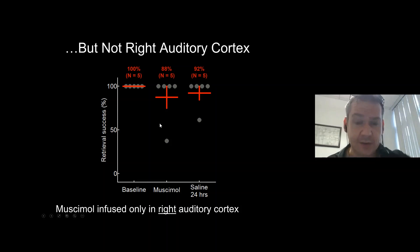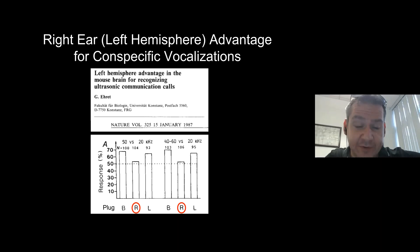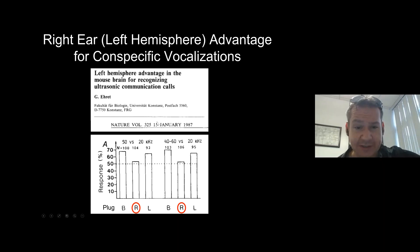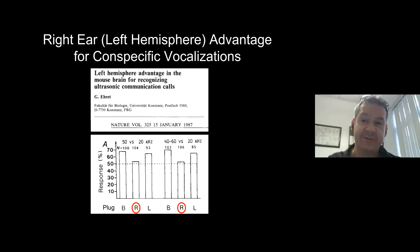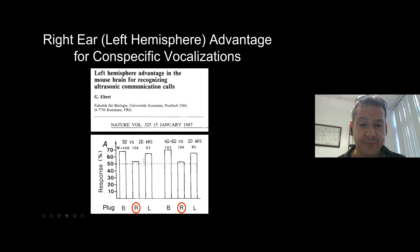This is consistent with earlier work from Gunther Ehret's lab. Gunther has been recording and synthesizing pup vocalizations dating back to the seventies and eighties. He published a single bar graph in Nature in 1987, testing hundreds of animals on a T-maze where one arm plays infant distress calls and the other arm plays scrambled sounds. Mothers fitted with a right ear plug perform at chance. Animals with a left ear plug show a right-ear / left-hemisphere advantage for responding to the sounds of conspecifics.